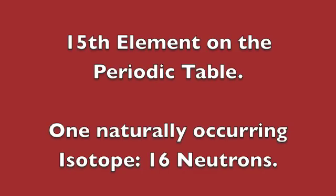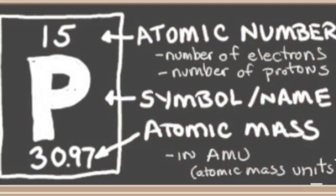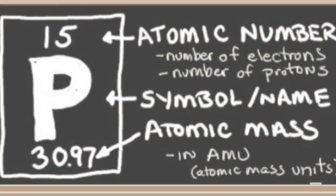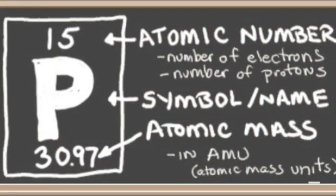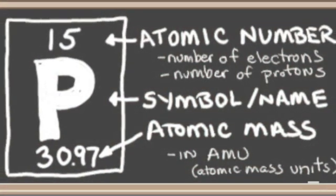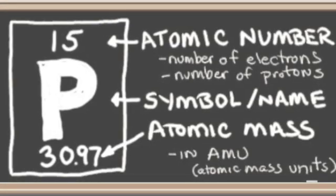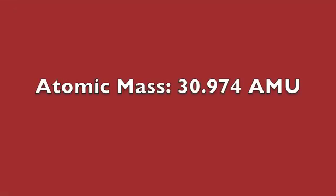Phosphorus is the 15th element on the periodic table and has only one naturally occurring isotope of 16 neutrons, however there have been other synthetic radioactive isotopes made. Phosphorus has the symbol P, a period of 3, and is part of the 15th or nitrogen group. Its atomic weight is 30.974.